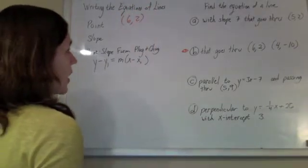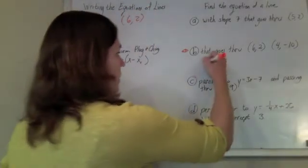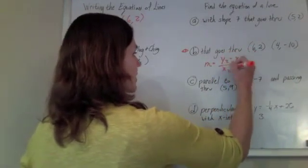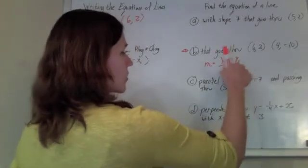And then to get the slope, well, we know how to find slope. It's just the difference in y's over the difference in x's. Change in y over change in x. Rise over run.